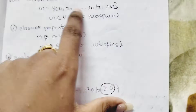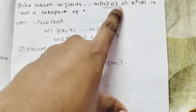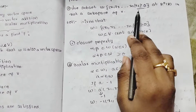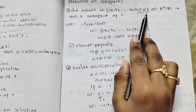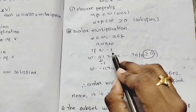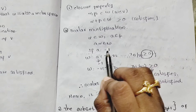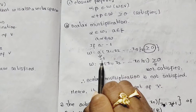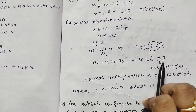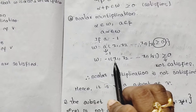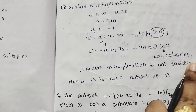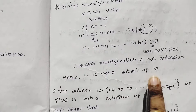Now let's see the condition: x1 is greater than or equal to 0. As per this condition, x1 is greater than or equal to 0. But here in scalar multiplication, if we let A equal minus 1, then A times x1 gives minus x1, which is negative and less than 0. So this condition is not satisfied — scalar multiplication is not satisfied. Hence it is not a subspace.